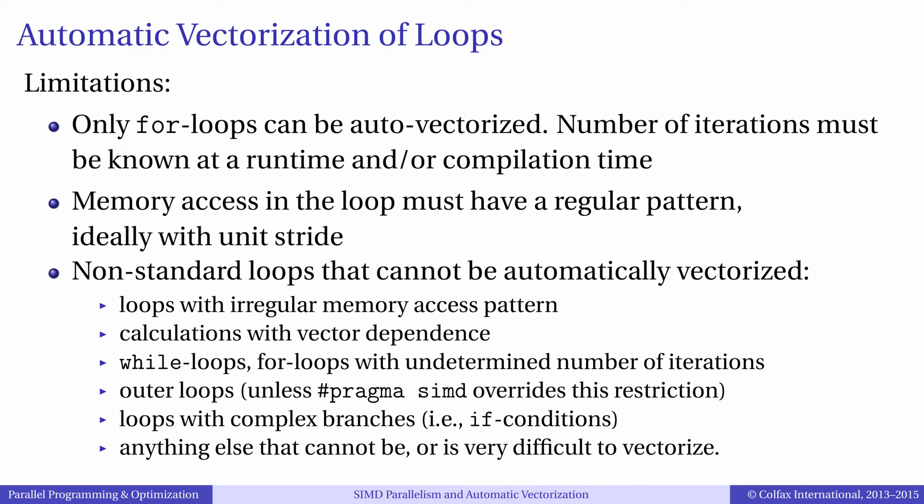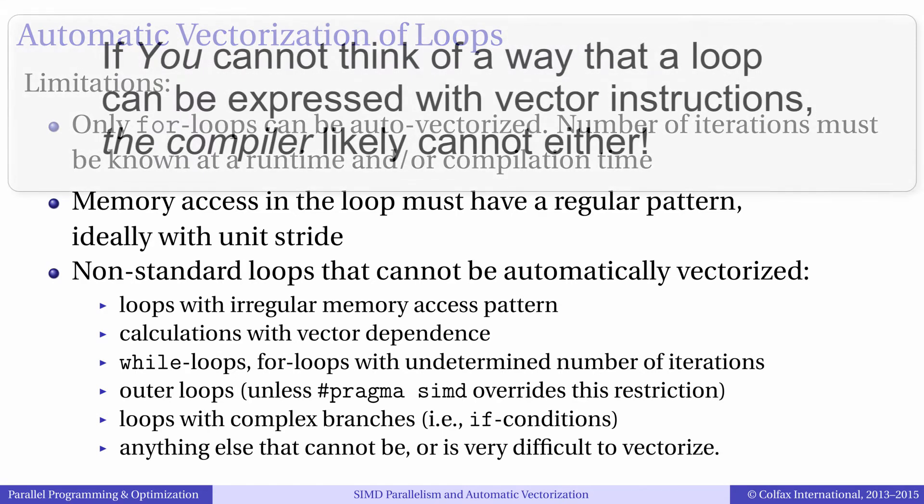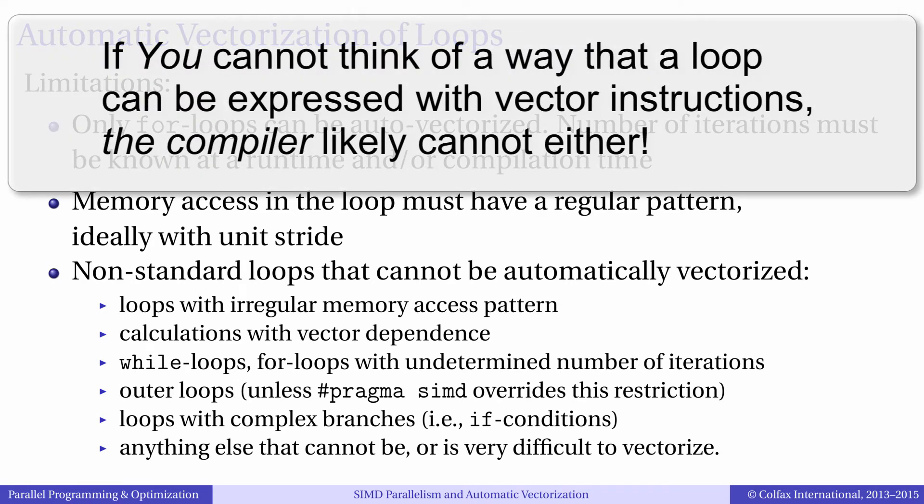A good way to think about automatic vectorization is that if you cannot think of a way that a loop can be expressed with the vector instructions, the compiler likely cannot either. In cases where automatic vectorization fails, redesigning the code, algorithm, and data structures may lead to better performance results.